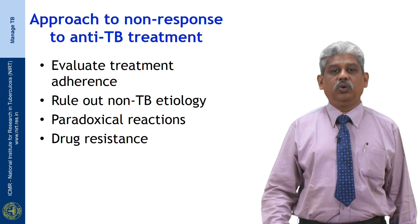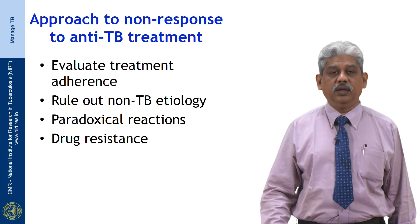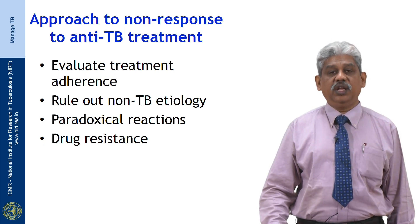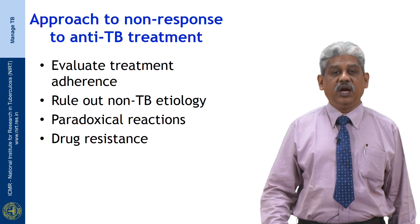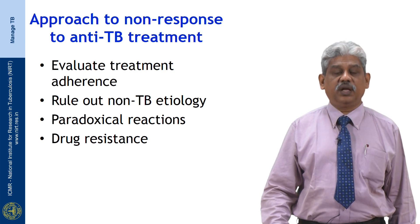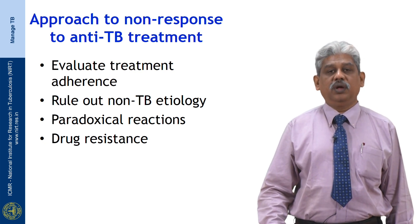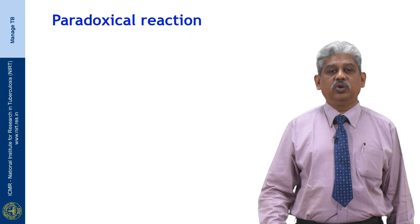First, look at whether the patient is taking the drug regimen properly. Next, reevaluate whether this is truly a TB patient. Then look at paradoxical reaction, wherein in the early stages of therapy — the first three months — if it happens, that is the fourth consideration. The fifth should be drug resistance.